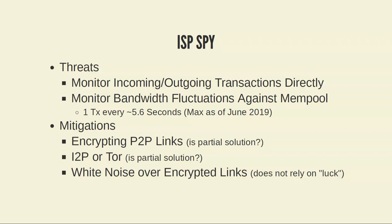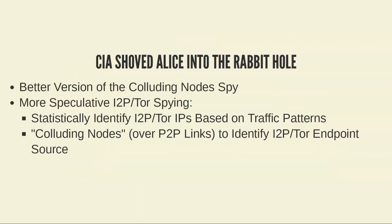As far as ISP spying goes, encrypting data whether directly over P2P links or via I2P and Tor is only a partial solution, because you're somewhat relying on luck — it's only hidden if the protocol happened to be sending something at that time that masks what you're doing. That's why in my original forum proposal I proposed adding white noise over I2P.